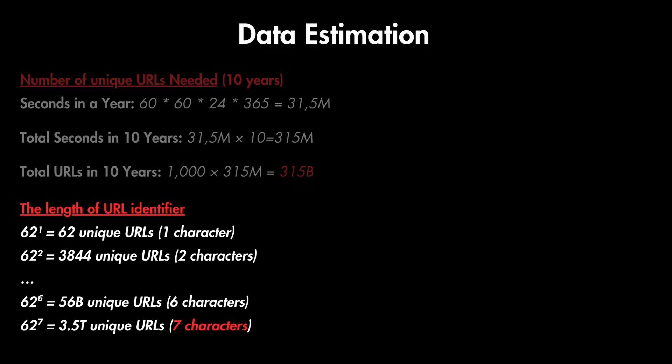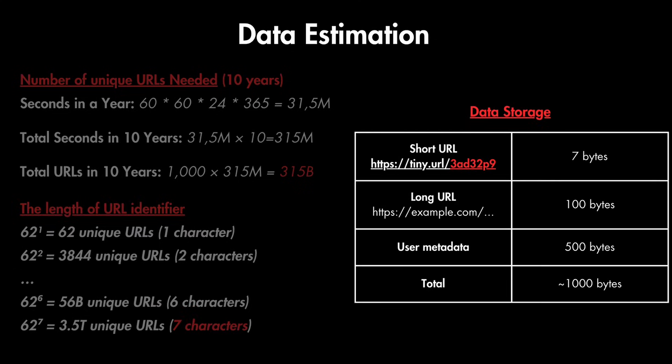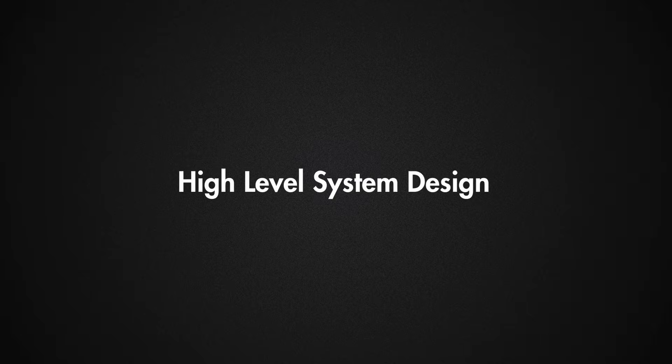Based on this, let's also do the data math to see how much data we'll be storing. For each URL we store the unique identifier — just the 7 characters, which is 7 bytes. We also store the long URL, up to 100 characters meaning 100 bytes, and some additional user metadata of around 500 bytes per URL. Rounding up to 1000 bytes maximum per URL, we'll store 1000 times 315 billion, which is 315 terabytes of data.